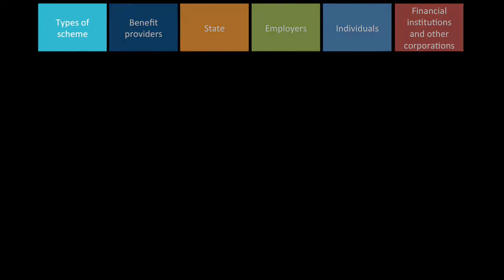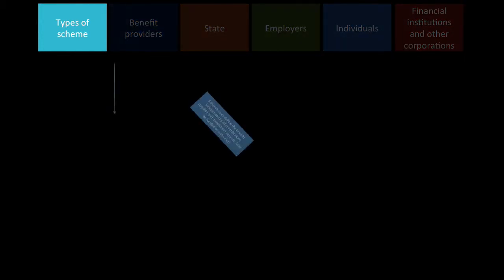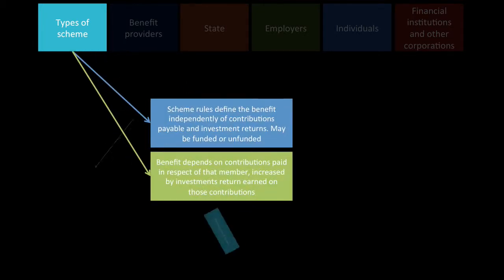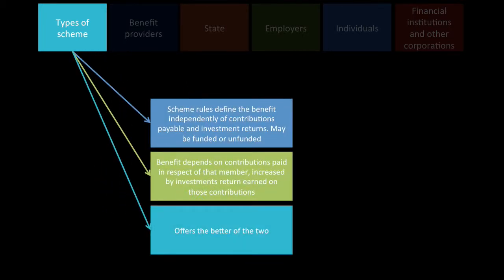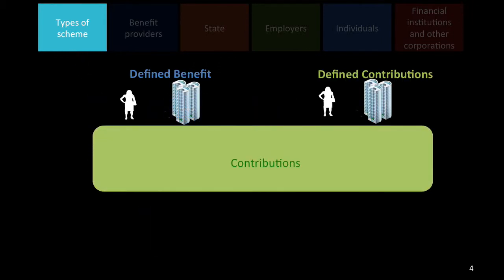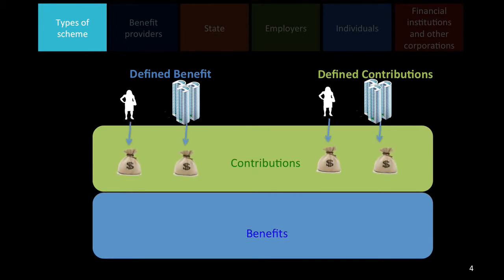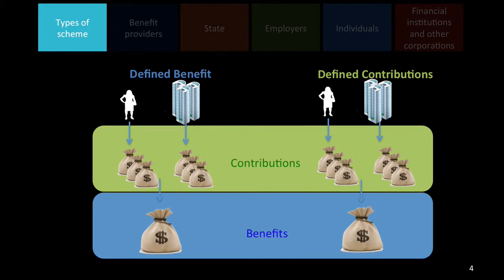Types of schemes: we've got defined benefit, defined contribution, and the hybrid, which is the best of both worlds. In both schemes, both the employee and the employer make contributions, and then they form benefits. With defined benefit, the benefit is defined or locked in, and with defined contribution, the contribution is locked in.